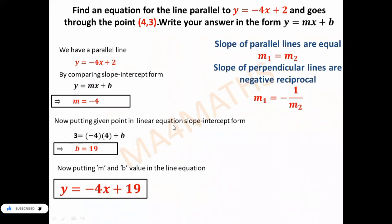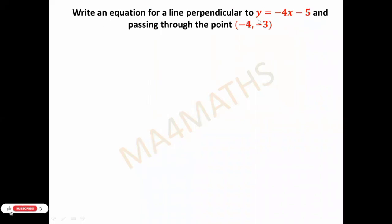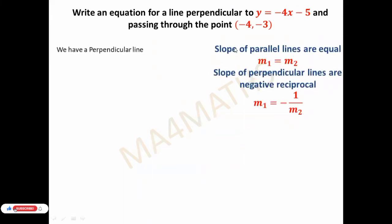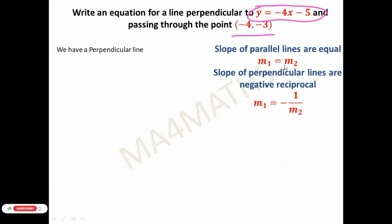Our next problem: write an equation for a line perpendicular to y = -4x - 5 and passing through the point (-4, -3). Remember the formula: for parallel lines, slopes are equal; for perpendicular lines, slopes are negative reciprocals — m1 = -1/m2, where m1 and m2 are the slopes of the two lines.